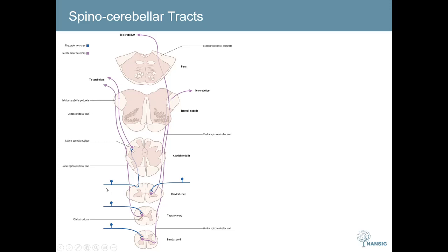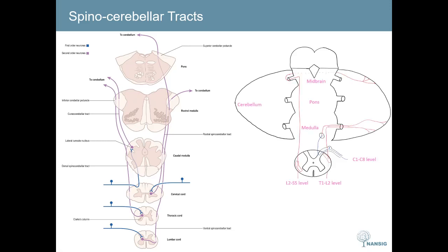The next tract is the cuneocerebellar tract. This one is a little different — it covers sensation from C1 to C8. The first order neuron enters via the dorsal root and immediately ascends to the lateral cuneate nucleus, which is in the caudal medulla next to the nucleus cuneatus and nucleus gracilis. It then synapses onto the second order neuron, which ascends slightly further and leaves via the inferior cerebellar peduncle to go to the ipsilateral side of where the sensation occurred. In the summary diagram, the red neurons are the second order neurons, the blue one is the first order neuron, covering the cuneocerebellar tract, the dorsal spinocerebellar tract, and the ventral spinocerebellar tract.